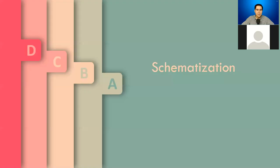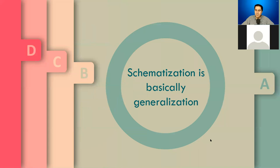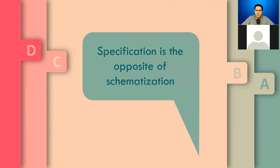Let's look at what Langacker has to say about schematization and why it is so important for cognitive linguistics. Schematization is basically a generalization — that's a broad definition, but a helpful one. Specification is the opposite of schematization. We'll tackle the most general characteristics of both.